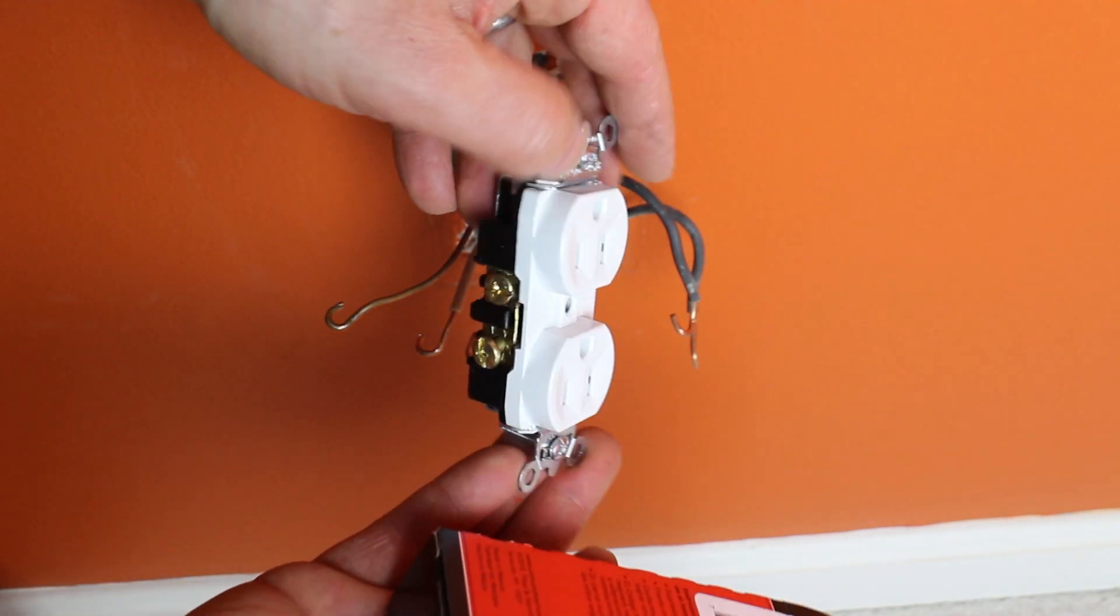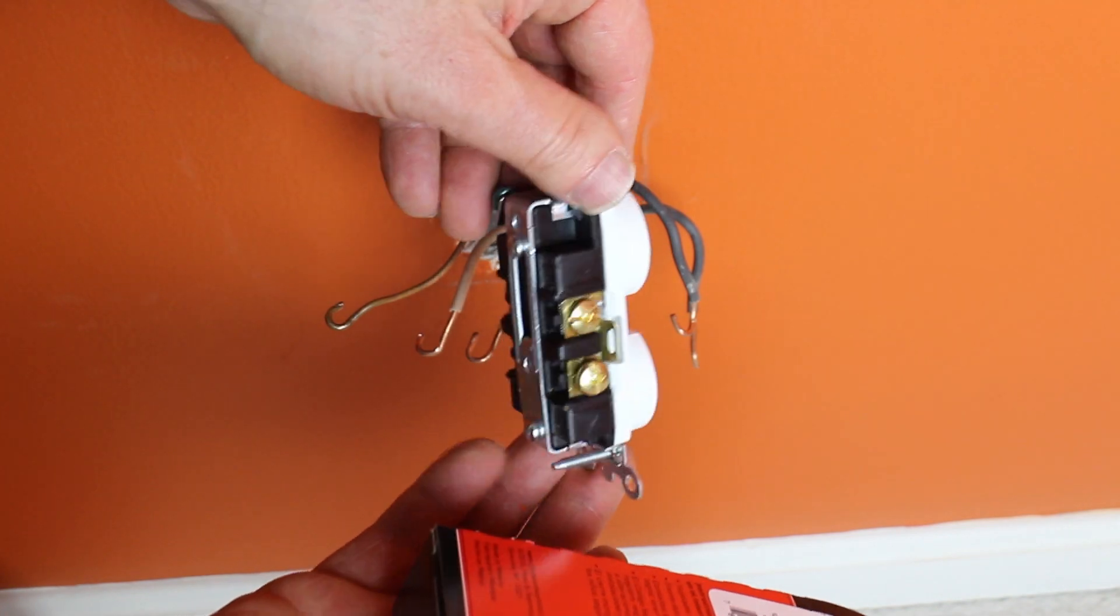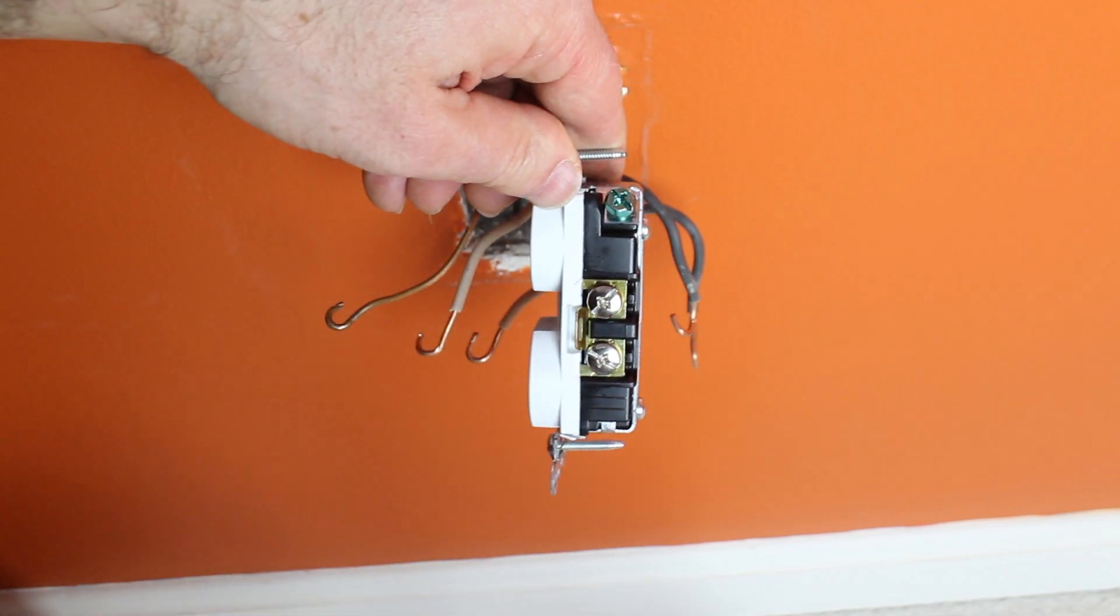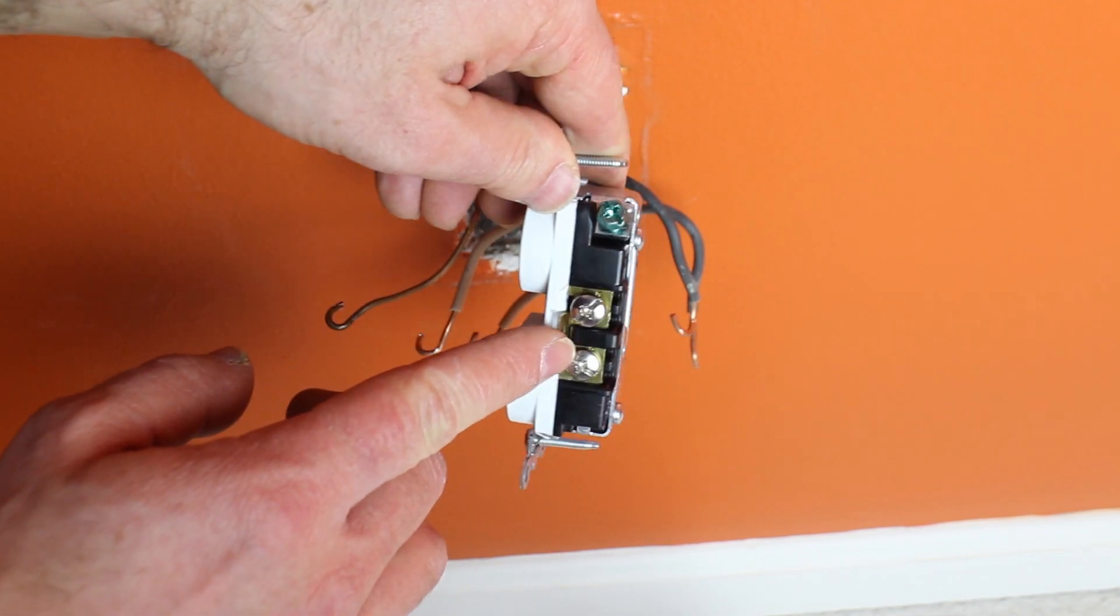Here we go. Here's the outlet. There are the brass screws. Here's the back of the outlet where you can push the wires into it. And then you have your silver screws for your neutral wires, and then your green ground screw.